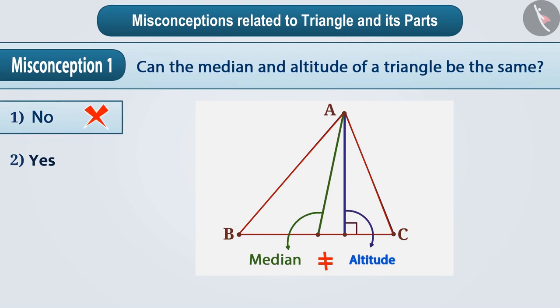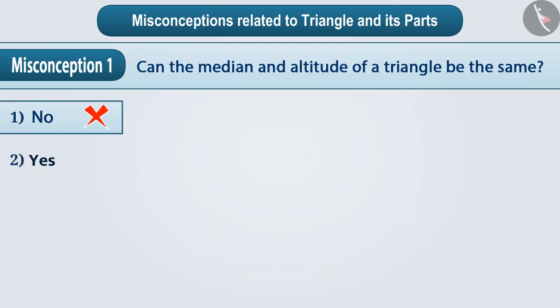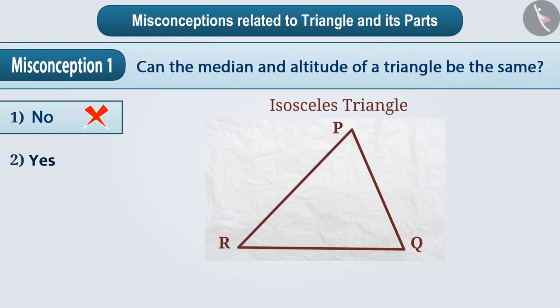Let us understand this with an activity. We draw an isosceles triangle, triangle PQR on a paper. You can see that the sides PR and QR are equal. Now we will cut this triangle.